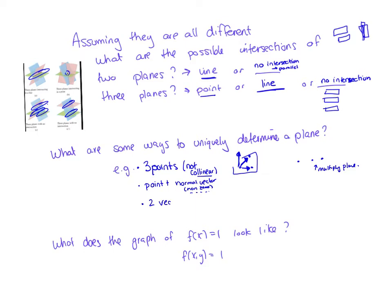What else is going to uniquely determine a plane? I could have two vectors in the plane and a single point on that plane. If I have some point and I know two vectors in the plane, that's going to uniquely determine my plane. And finally, I can have a point and a line, where that point must not be on the line — because if the point was on the line, it's the same as having three collinear points.